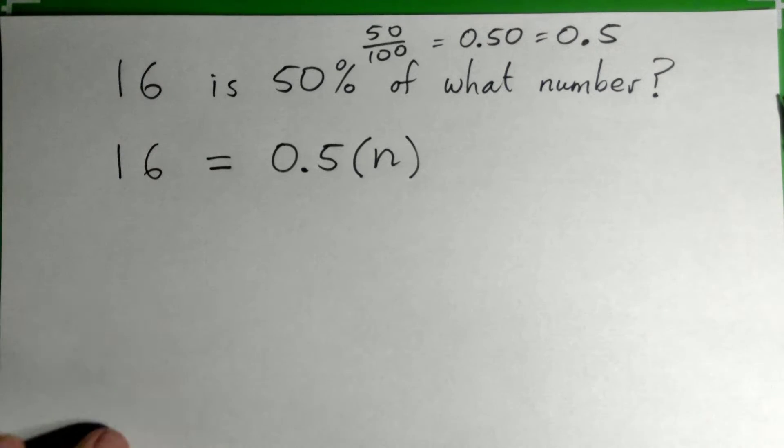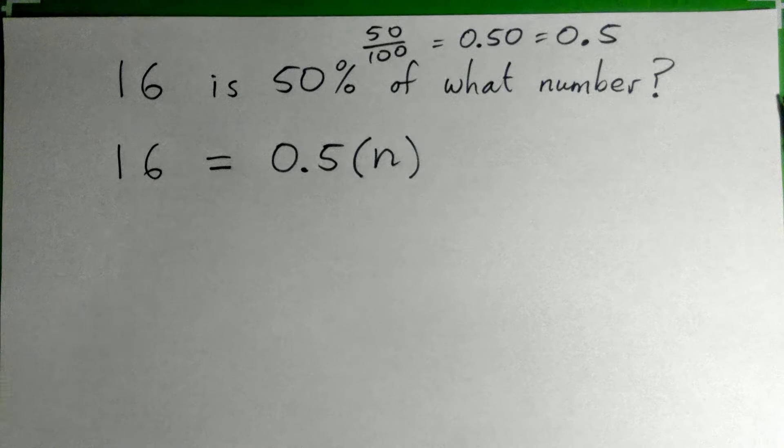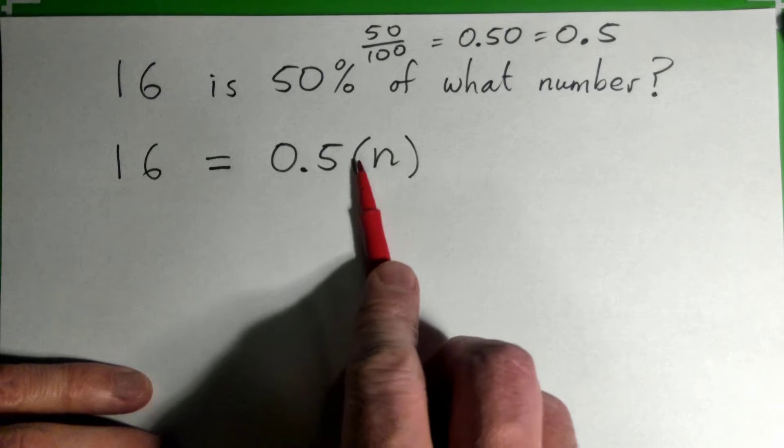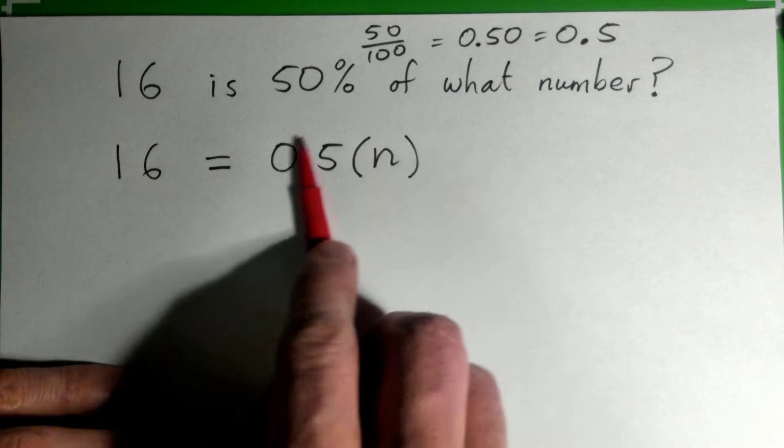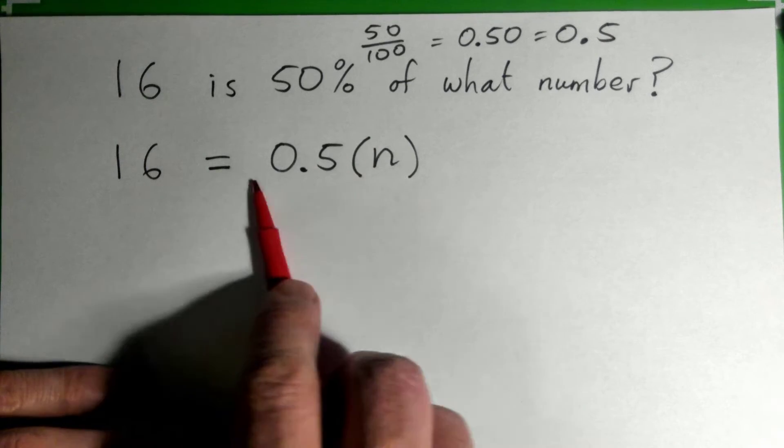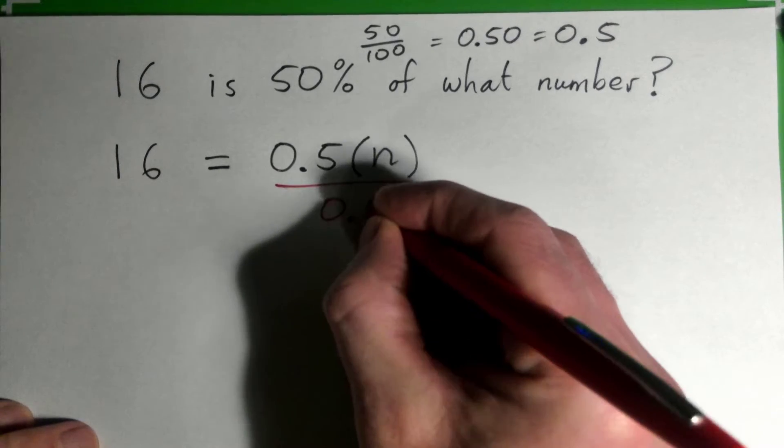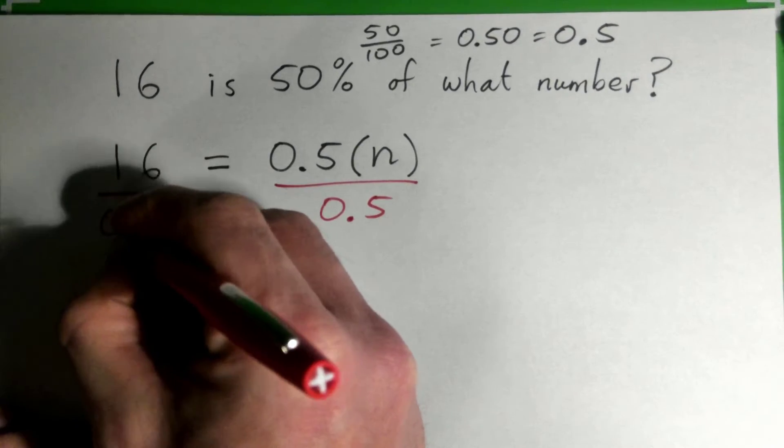So what we've got to do is solve this equation. We've turned the English sentence into an equation, now we've got to solve it. We've got 0.5 times n. How do you undo multiplying by 0.5? Good, divide both sides by 0.5, divide both sides by 0.5.